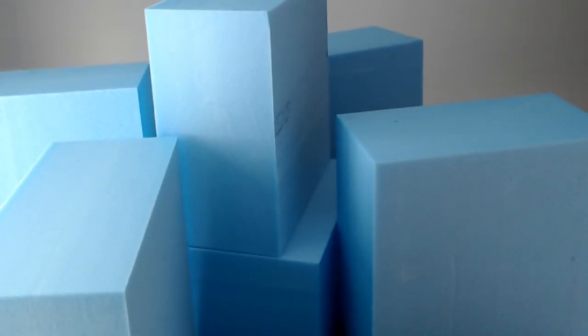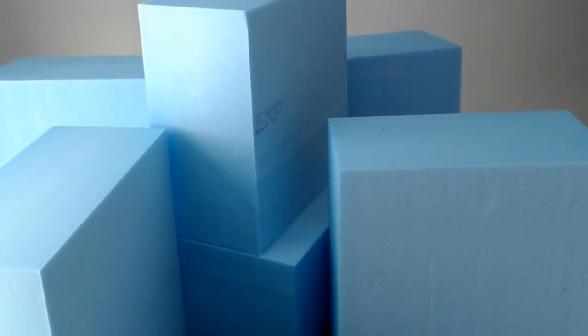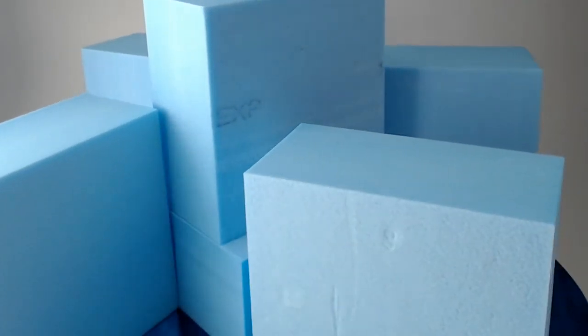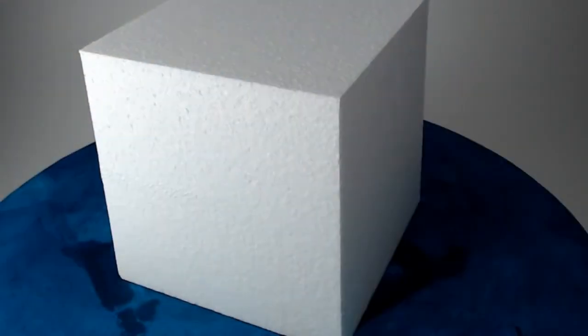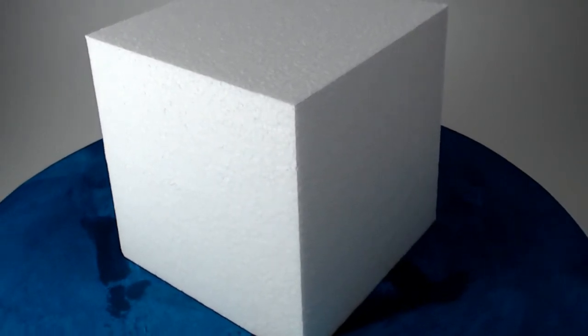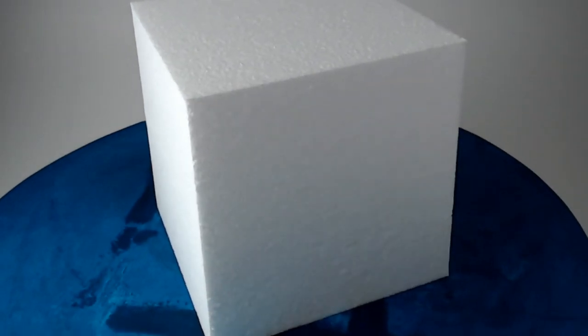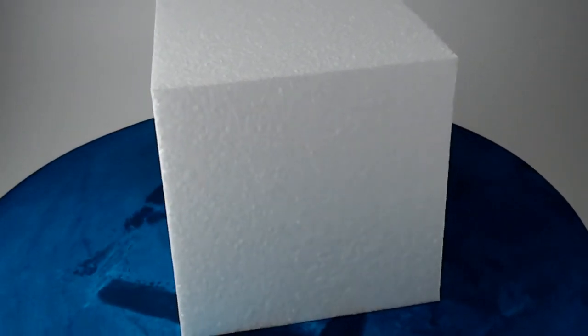Styrofoam which is blue or grey in colour weighs approximately 50 kilograms per cubic metre and is at least 90% air. Polystyrene which is white in colour weighs approximately 20 kilograms per cubic metre depending on its density grade and is 98% made of air.